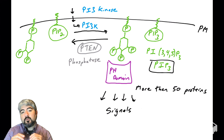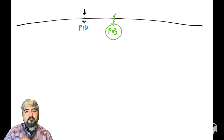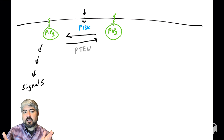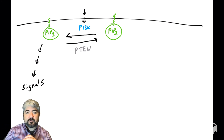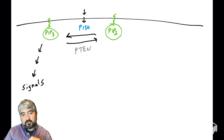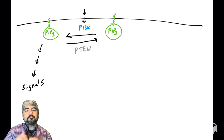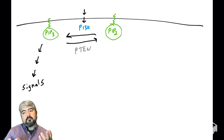PI3 kinase and PTEN have opposite, antagonistic roles: PI3 kinase helps create more PIP3, and PTEN helps lower levels of PIP3. We'll learn more about how important PIP3 is in a later video when we talk about AKT kinase. To summarize: typically this is drawn as PIP2 and PIP3 with arrows between them. Those arrows represent PI3 kinase phosphorylating PIP2 to create PIP3, which sends signals into the cell, and PTEN converting PIP3 back into PIP2.